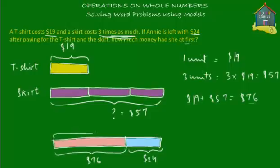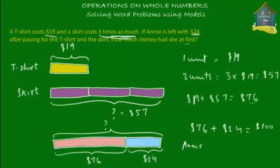So how much did she have at first? Obviously she had $76 plus $24 at first. The amount of money she had at first is $76 + $24 = $100. So Annie had $100 at first.